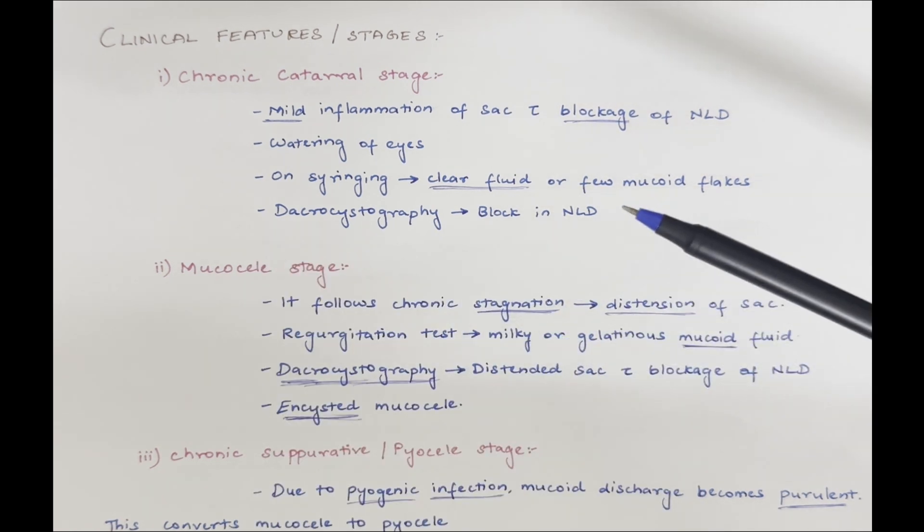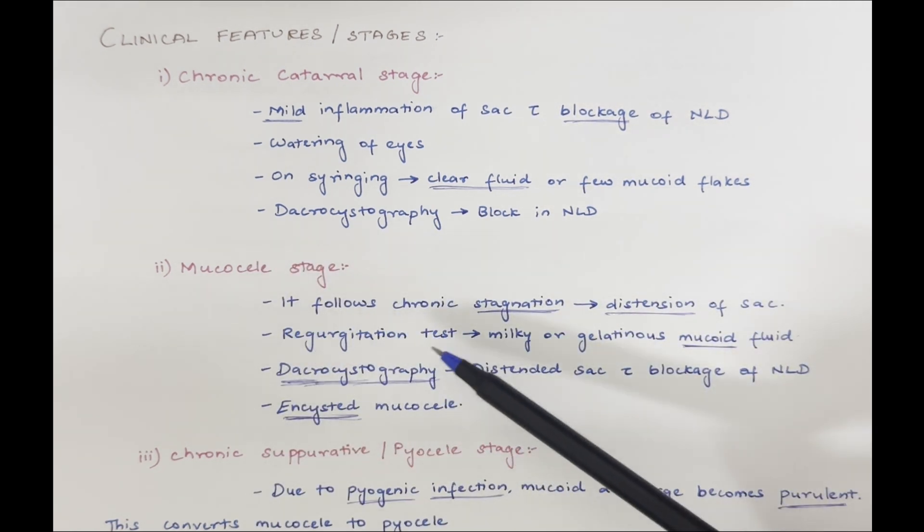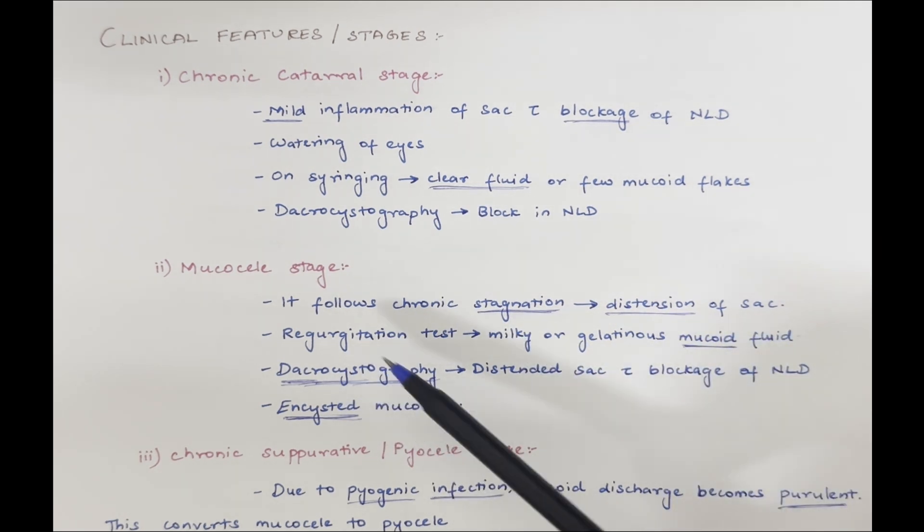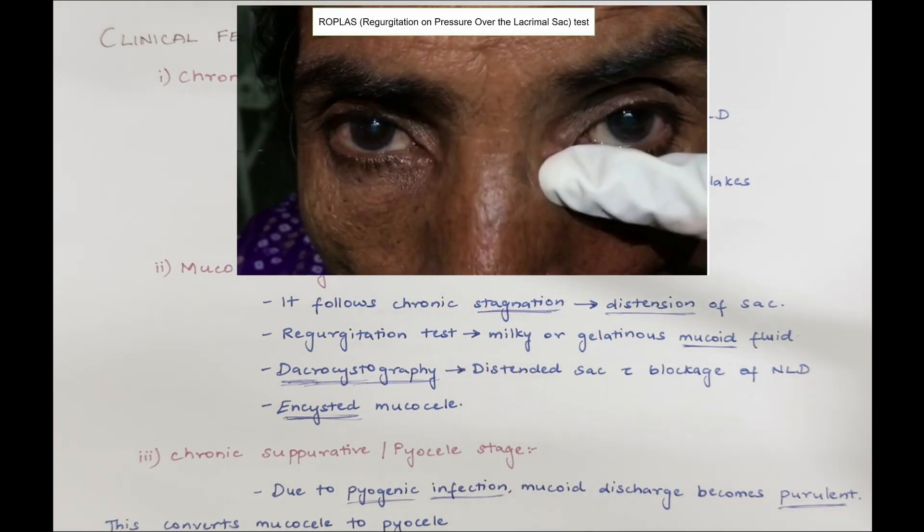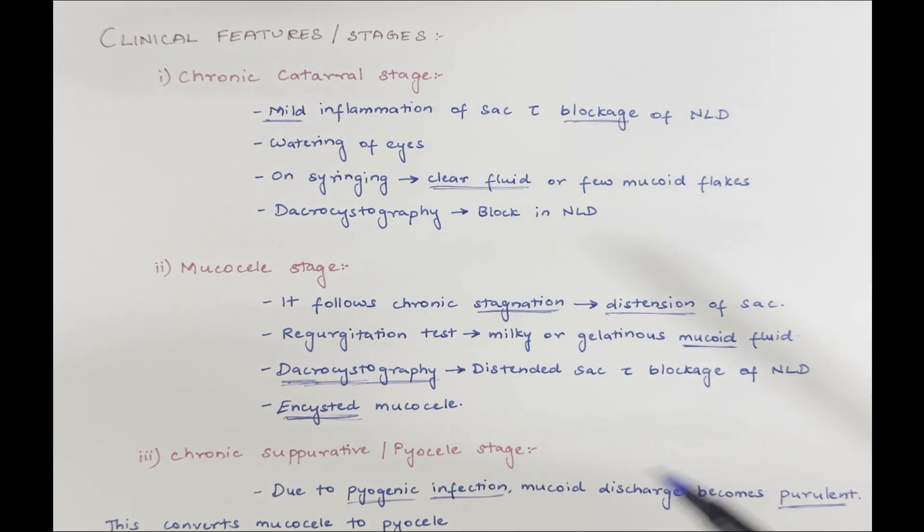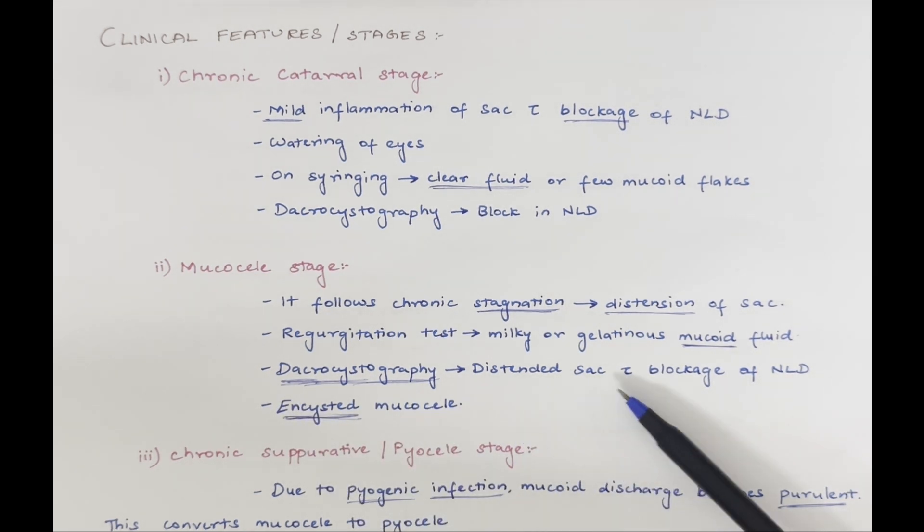Second stage is mucosal stage. It follows chronic stagnation of tears which will lead to distention of the sac. Regurgitation is the test where we press against the lacrimal sac of the patient. On regurgitation test, we can see milky or gelatinous mucoid fluid. On dacryocystography, we can see distended sac along with blockage of nasolacrimal duct.